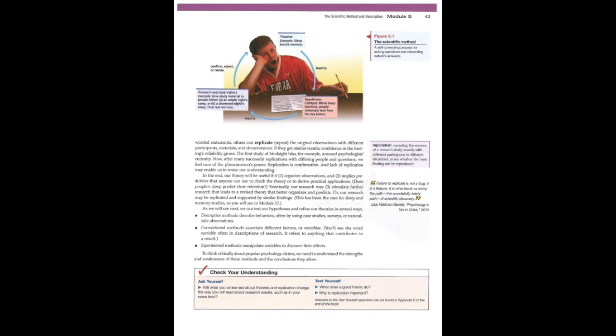Descriptive methods describe behaviors, often by using case studies, surveys, or naturalistic observations. Correlation methods associate different factors or variables. You'll see the word variable often in descriptions of research. It refers to anything that contributes to a result. Experimental methods manipulate variables to discover their effects. To think critically about popular psychology claims, we need to understand the strengths and weaknesses of these methods and the conclusions they allow.